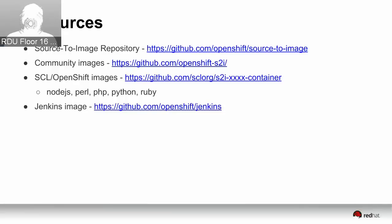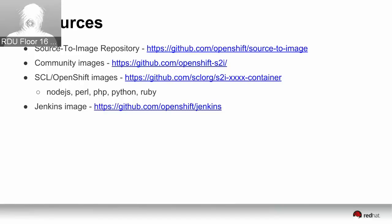A couple of resources: the source-to-image repo itself on GitHub; community S2I images in the OpenShift-S2I GitHub organization; images produced by our Software Collections Library team under the GitHub SCL org — Node.js, Perl, PHP, Python, and Ruby — plus a WildFly image, a .NET image, and the Jenkins image under OpenShift-S2I/jenkins. Anything on Docker Hub can also be used with the S2I tool.